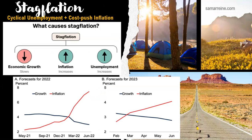We have one last point to make, and that is stagflation. Stagflation comes from when two relatively dangerous things stagger and fall on top of each other. Since 'flation' is in the word, we're looking at inflation. Stagflation is known as the twin maladies of high unemployment and high inflation hitting an economy at the same time.